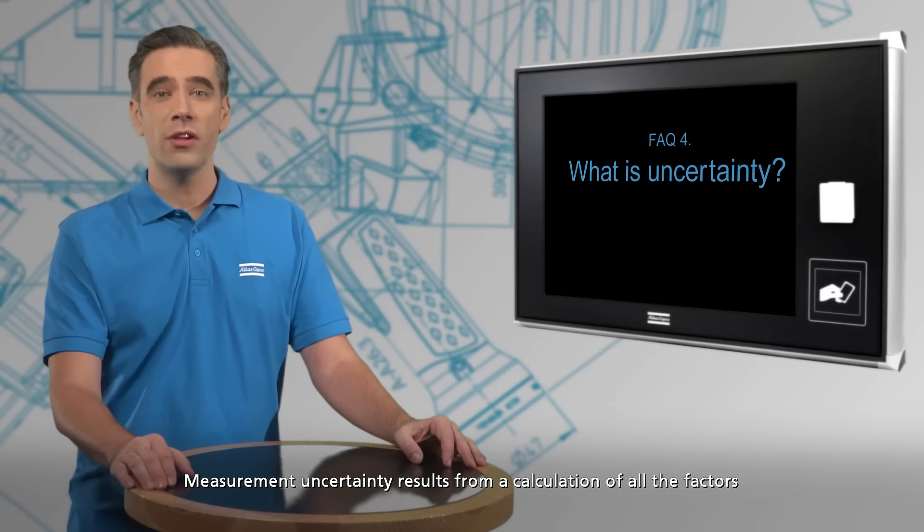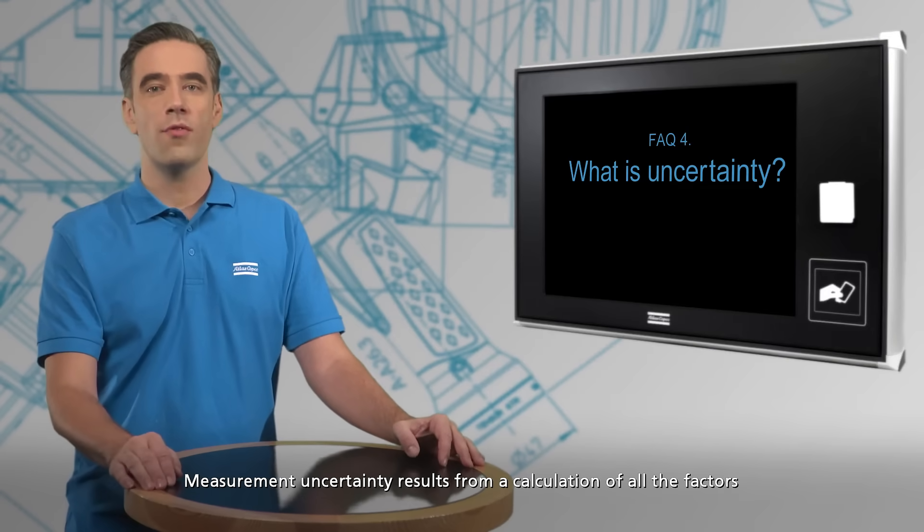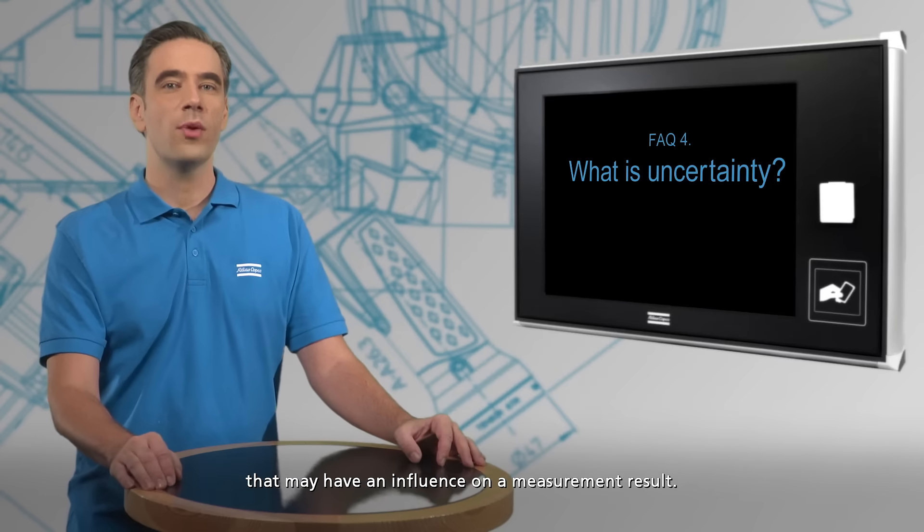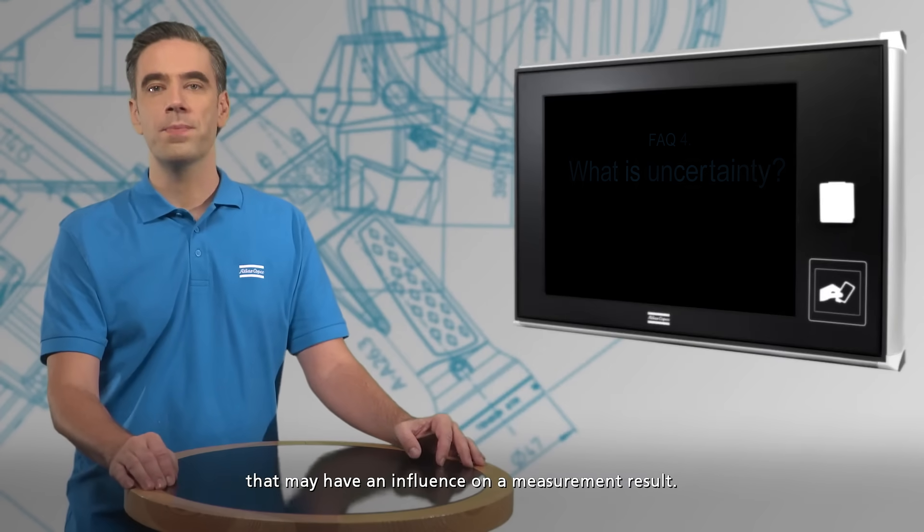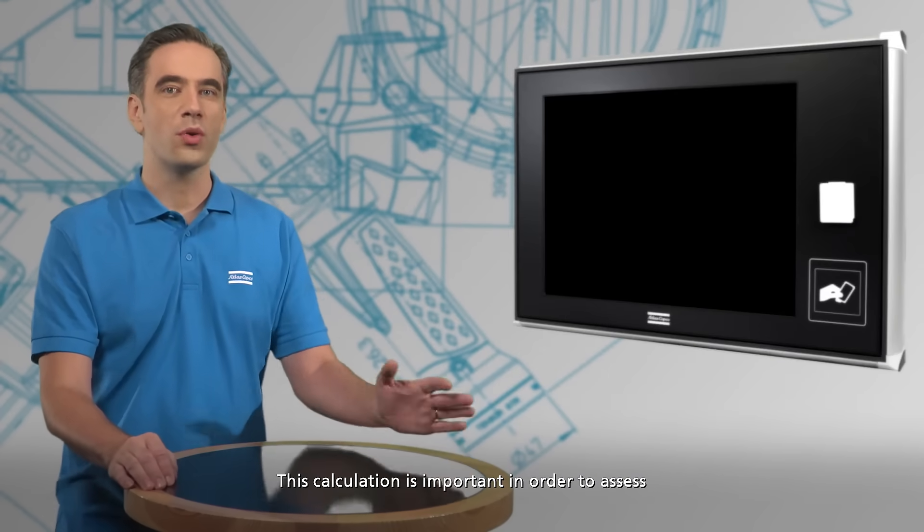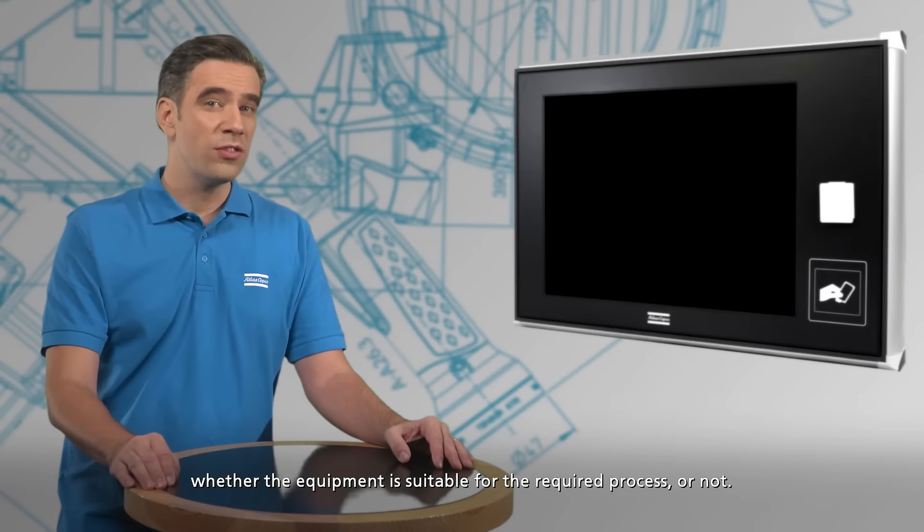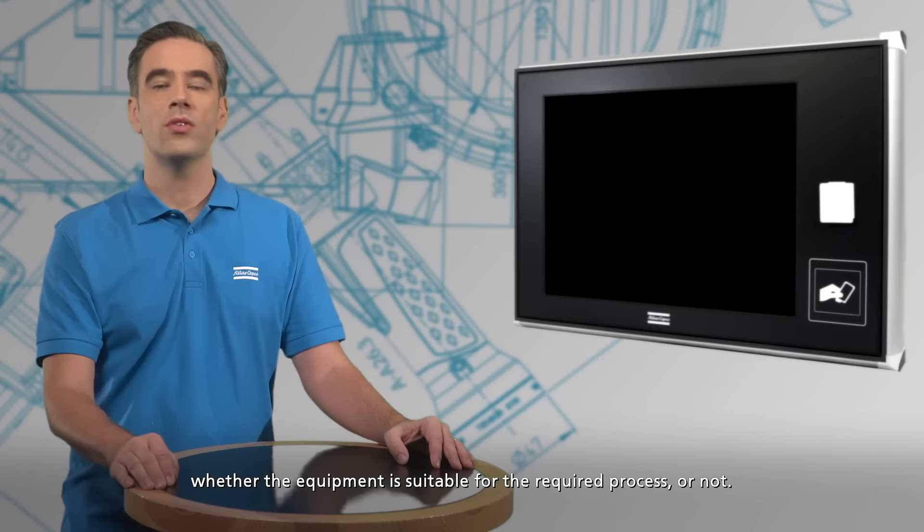Measurement uncertainty results from a calculation of all the factors that may have an influence on a measurement result. This calculation is important to assess whether the equipment is suitable for the required process.